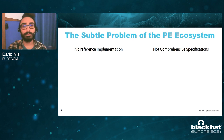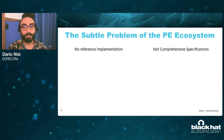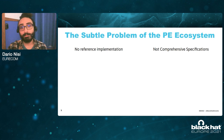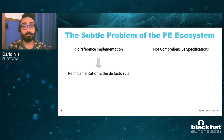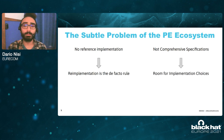While we were studying the PE ecosystem, we found two interesting things. The first is that there is not really a reference implementation for how to parse the PE file format correctly. The second observation was that the specifications, although they make a very good job in defining the headers, their structure, their fields, and their possible values, they are not really comprehensive. They do not tell what is to be considered a valid PE file or an invalid one, or at least they don't do it in all the possible circumstances.